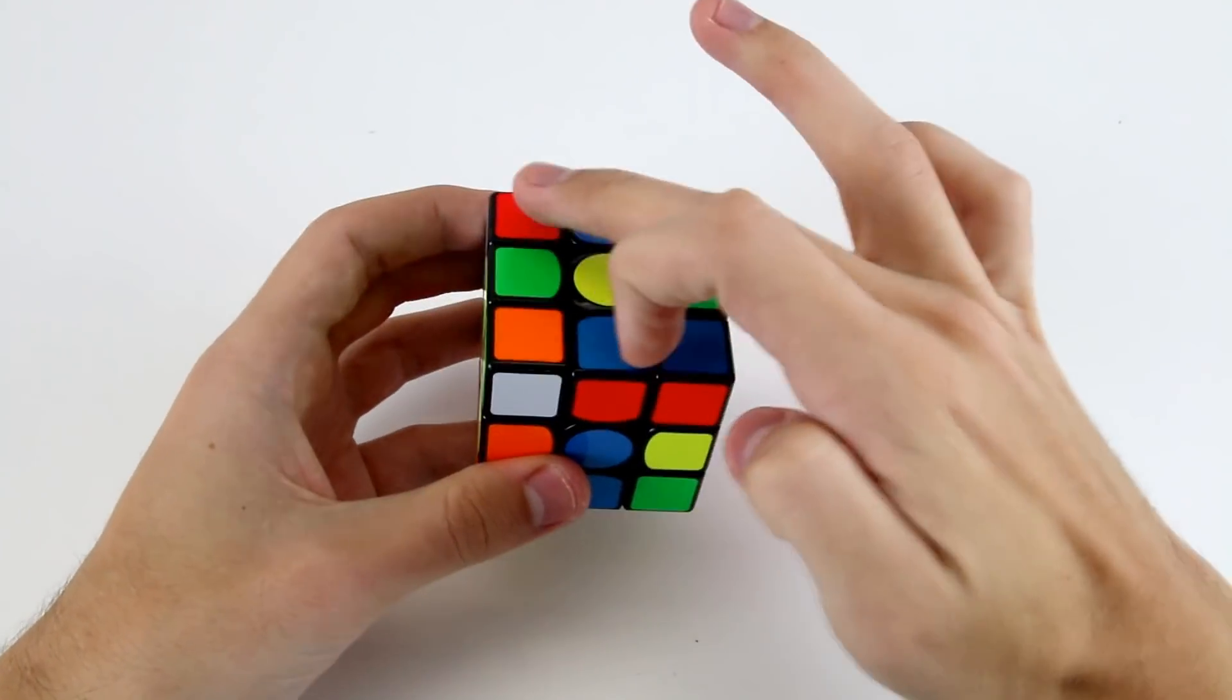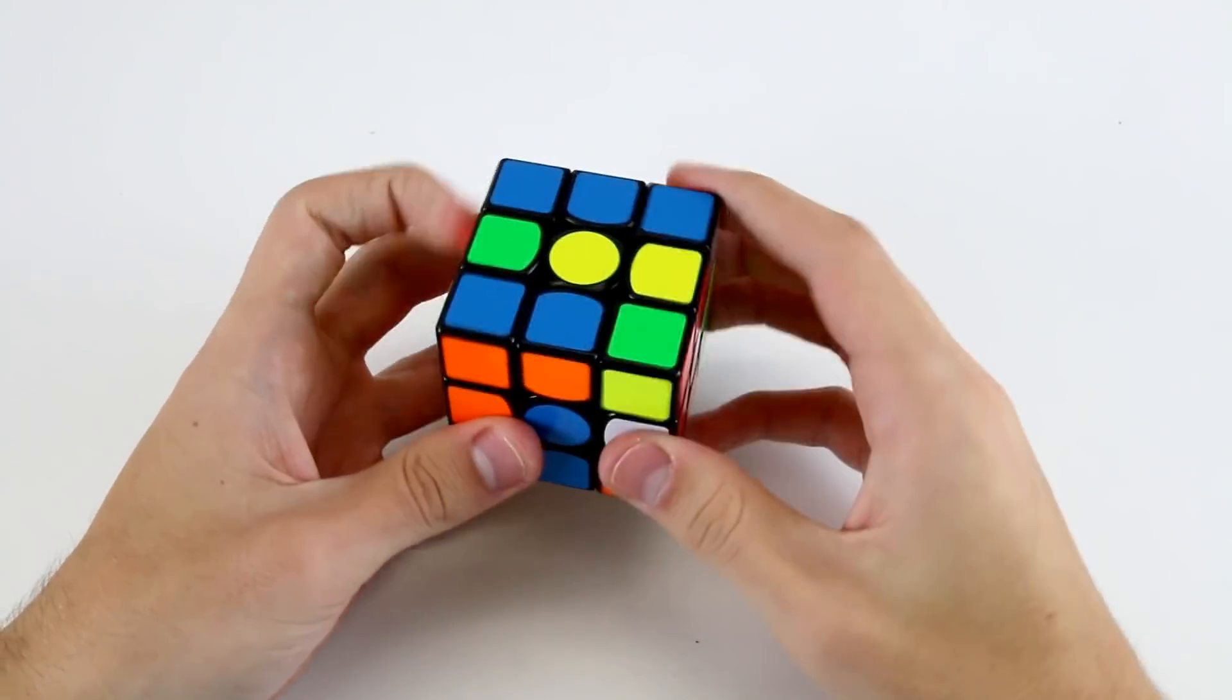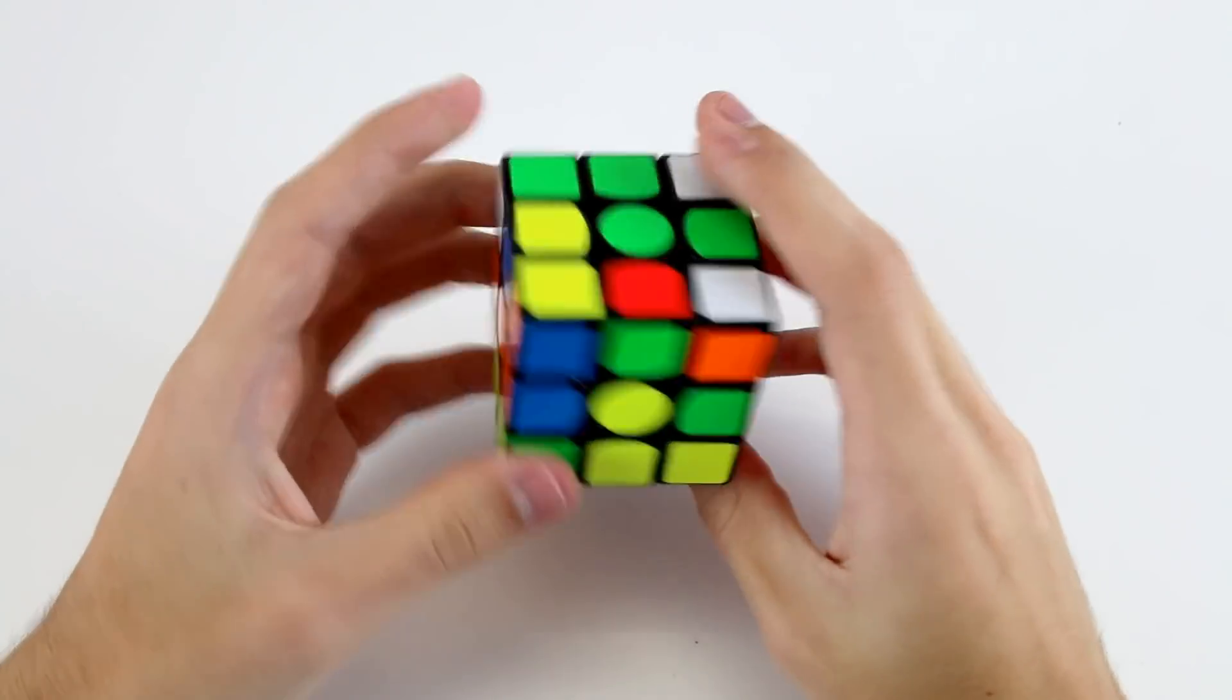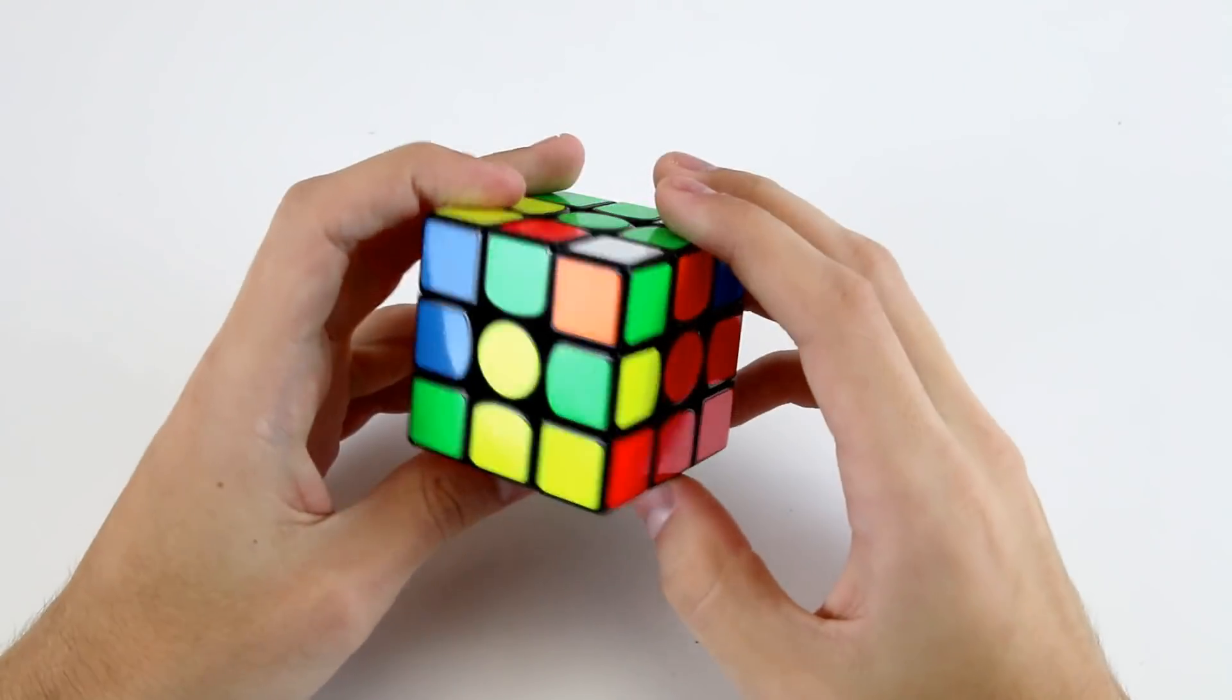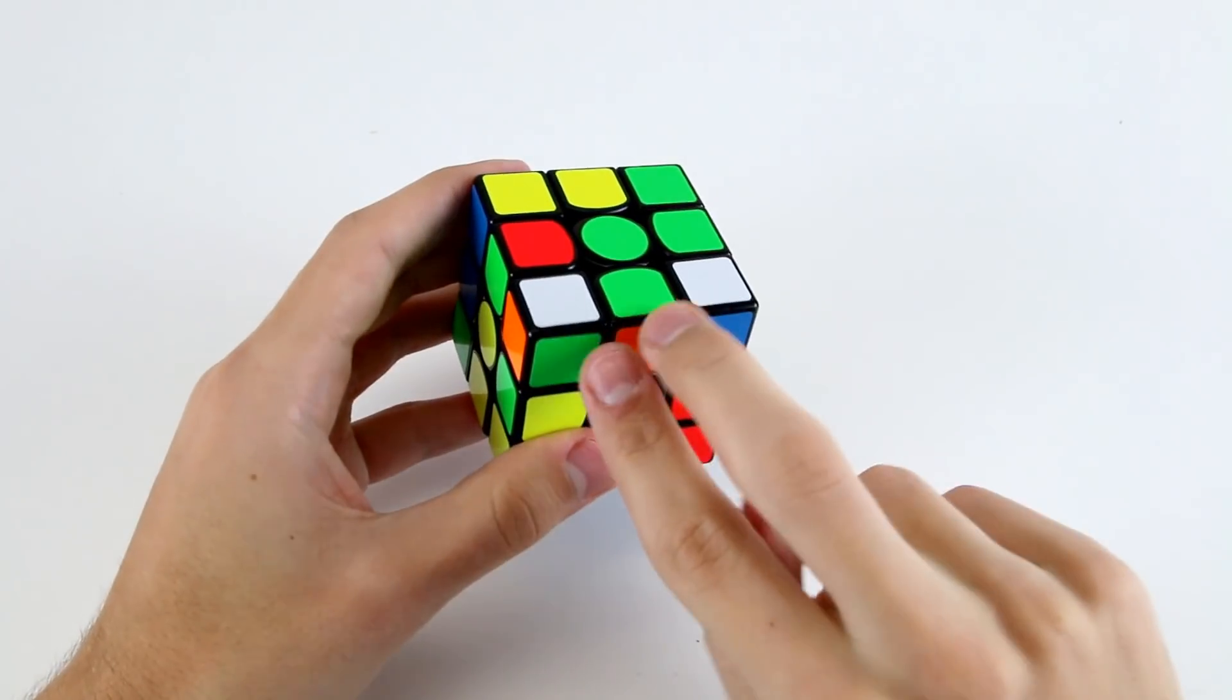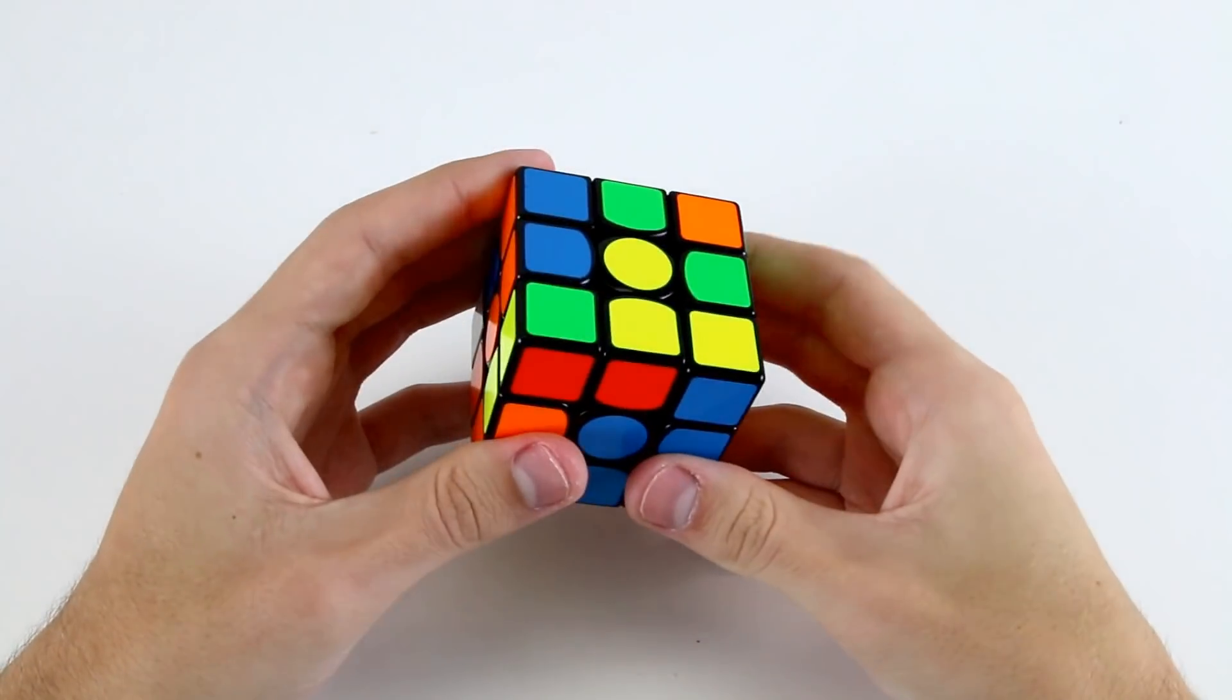My first F2L pair that I see are these two pieces which can be easily inserted like that. Then we've got a few different options. I don't know necessarily whether it would be that easy to do in a solve but I'd probably do these two next without a rotation.